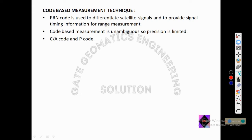What is code-based measurement technique? In code-based measurement technique, the PRN code is used to differentiate satellite signals and to provide signal timing information for range measurement. Code-based measurement is unambiguous, so precision is limited.